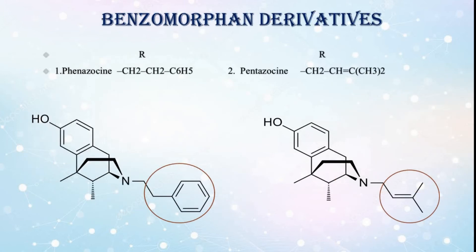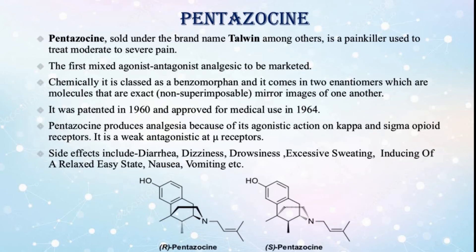Benzamorphan derivatives: first is phenazocine and second is pentazocine. Pentazocine, sold under the brand name Talwin among others, is a painkiller used to treat moderate to severe pain. It is the first mixed agonist-antagonist analgesic to be marketed. Chemically it is classed as a benzomorphan and it comes in two enantiomers, which are molecules that are exact, non-superimposable mirror images of one another. It was patented in 1960 and approved for medical use in 1964.